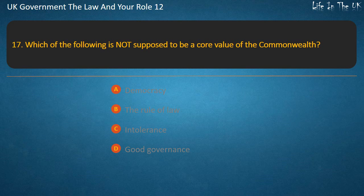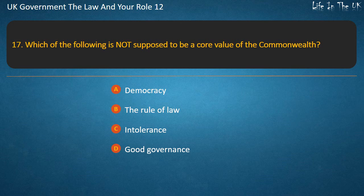Question 17: Which of the following is not supposed to be a core value of the Commonwealth? Democracy, the rule of law, intolerance, good governance. Answer: Intolerance.